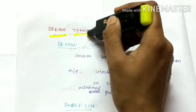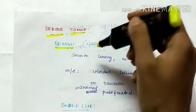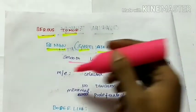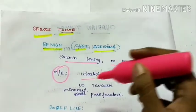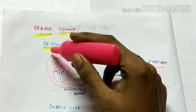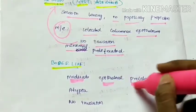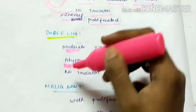First, the serous ovarian tumor. Under which, let's see about benign tumor, also called as cyst adenoma. It has a smooth lining and there is no papillary projection. Microscopically, it consists of ciliated columnar epithelium. There is no invasion as it is benign and there is only minimal proliferation. Next is borderline serous tumor. In borderline serous tumor, there is moderate epithelial proliferation and presence of ATPase, and even here there is no invasion.